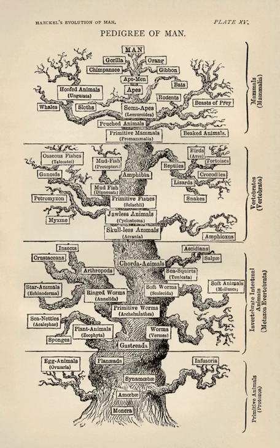Evolutionary biology is the subfield of biology that studies the evolutionary processes that produced the diversity of life on Earth, starting from a single common ancestor. These processes include natural selection, common descent, and speciation.